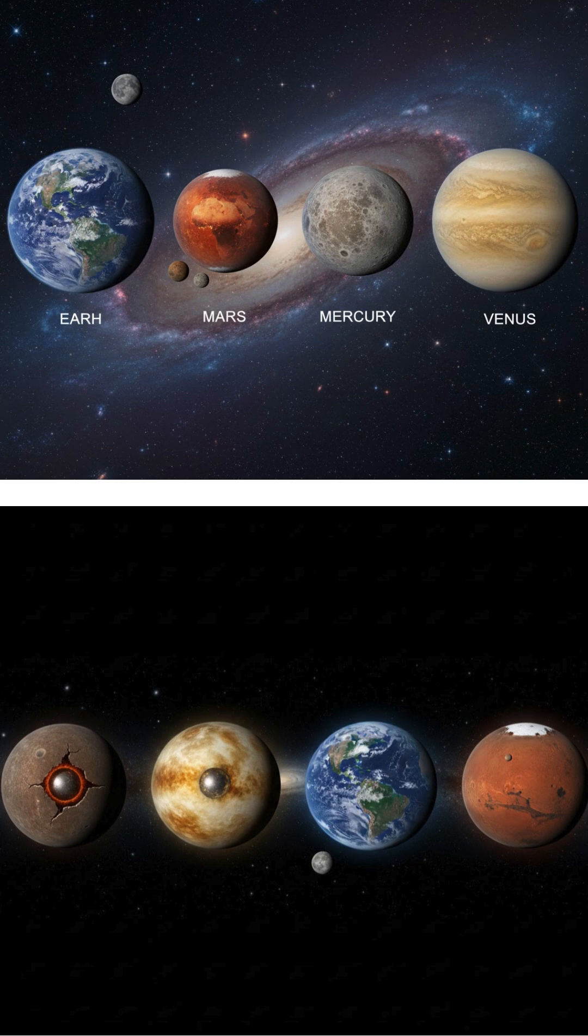These worlds are characterized by their solid, rocky surfaces, metallic cores, and relatively few moons. Earth has one, Mars has two, and Mercury and Venus have none.